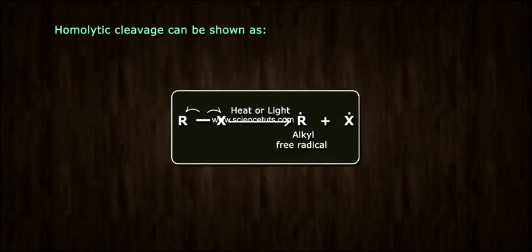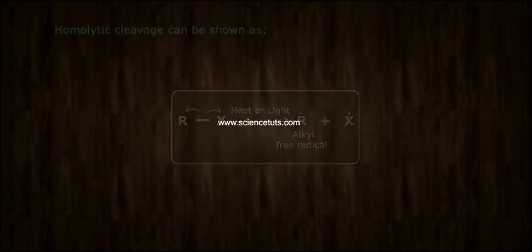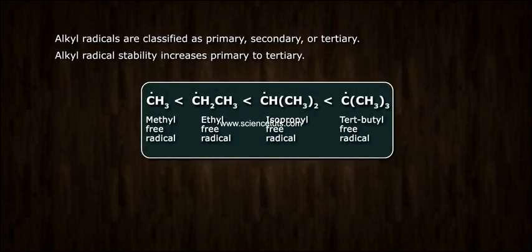Homolytic cleavage can be shown as follows. Alkyl radicals are classified as primary, secondary, or tertiary. Alkyl radical stability increases primary to tertiary.